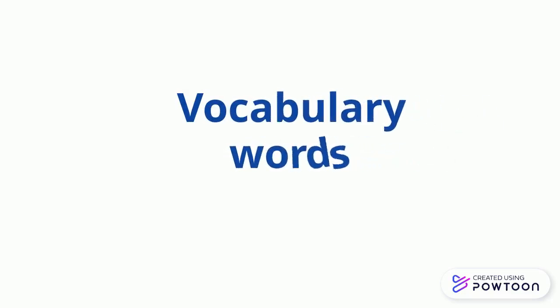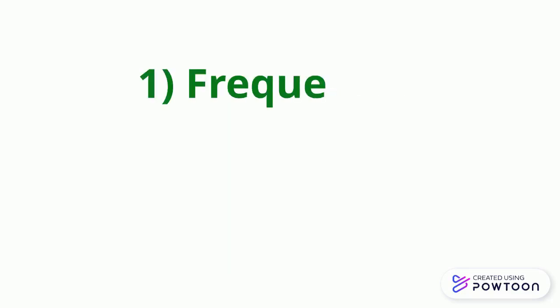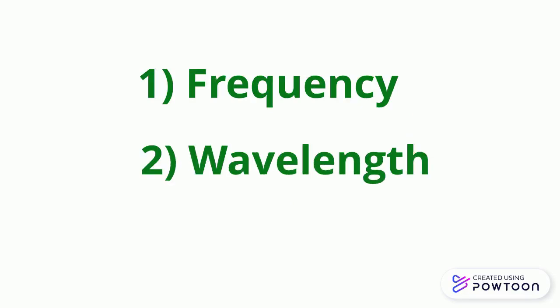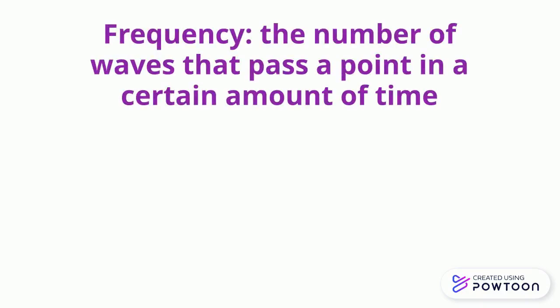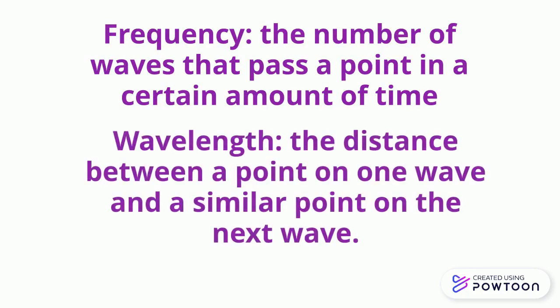Now let's talk about two important terms when we're talking about the way sound travels. Number one: frequency. Number two: wavelength. The frequency of a wave is the number of waves that pass a point in a certain amount of time. Wavelength is the distance between a point on one wave and a similar point on the next wave.